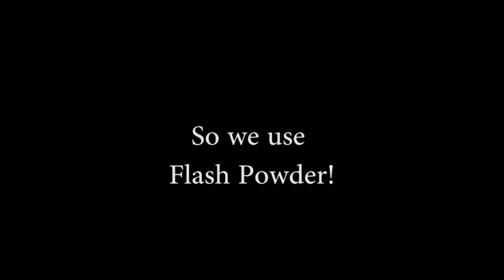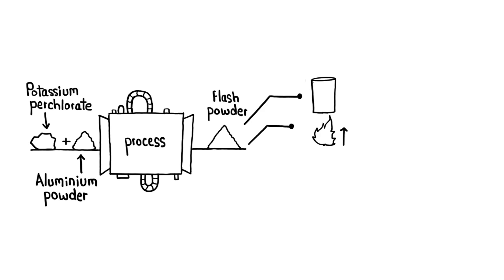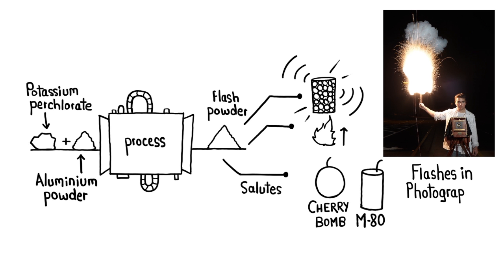So we use flashpowder. Flashpowder is commonly made using potassium perchlorate and aluminum powder. It burns quickly and, if confined, produces a loud noise. It's widely used in salutes, cherry bombs, M80s, and was once used for flashes in photography.